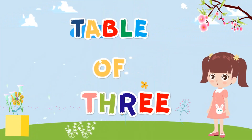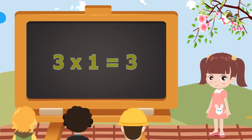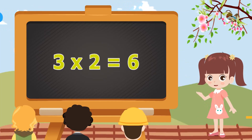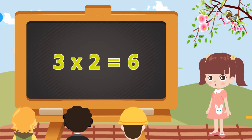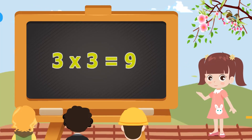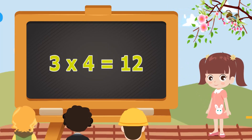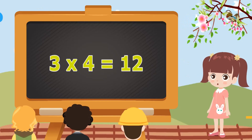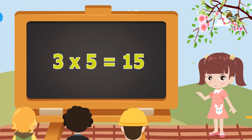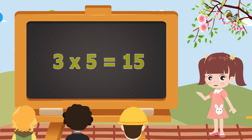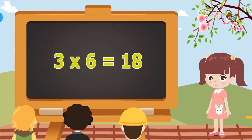Table of Tree. 3×1=3, 3×2=6, 3×3=9, 3×4=12, 3×5=15, 3×6=18.